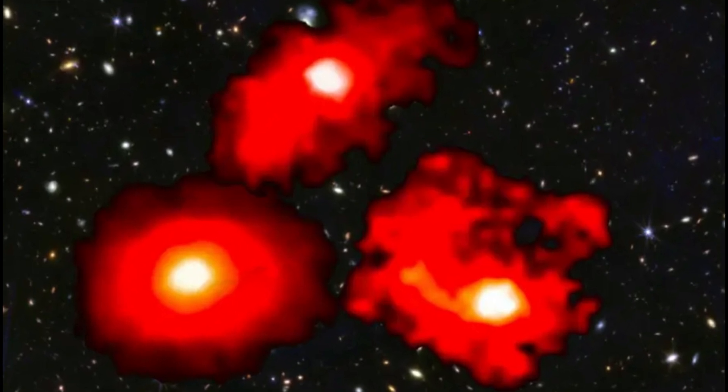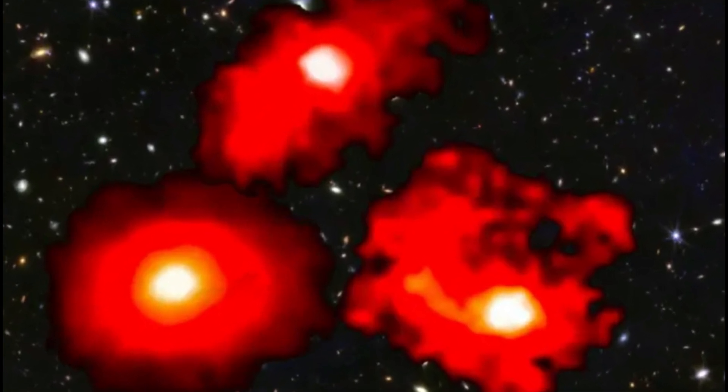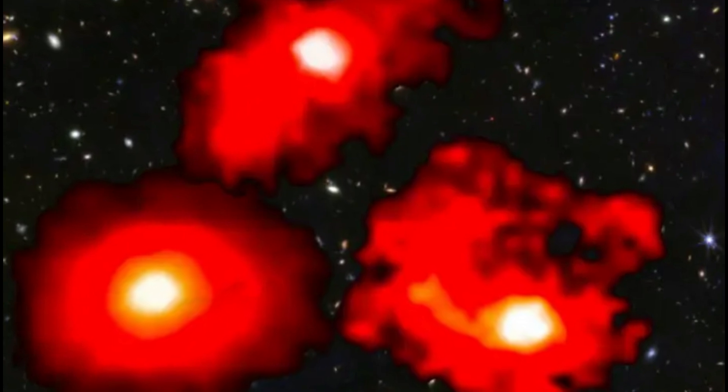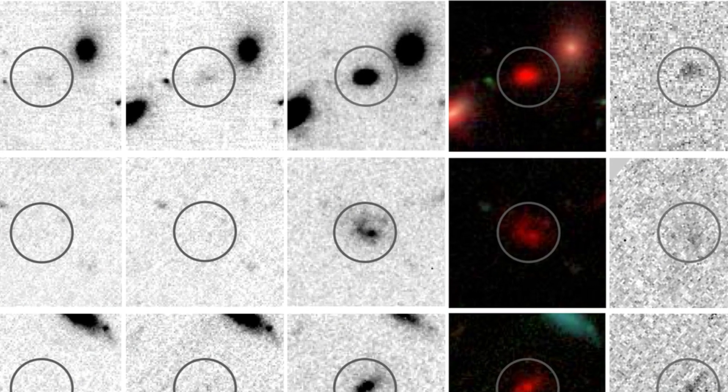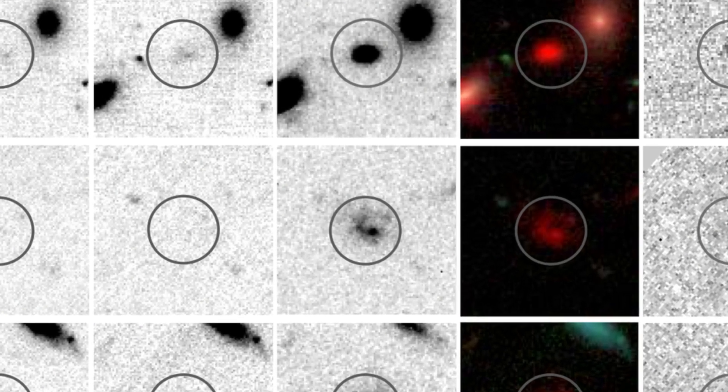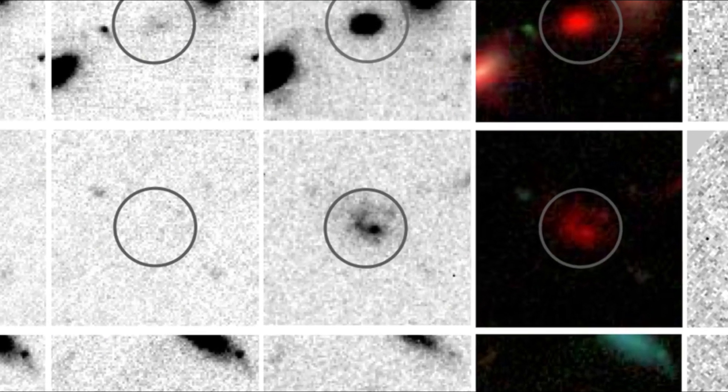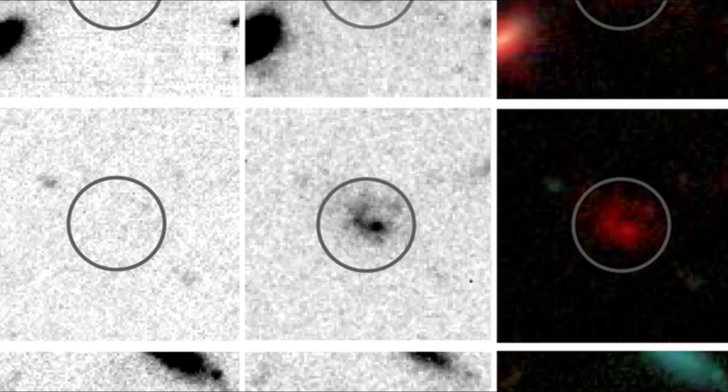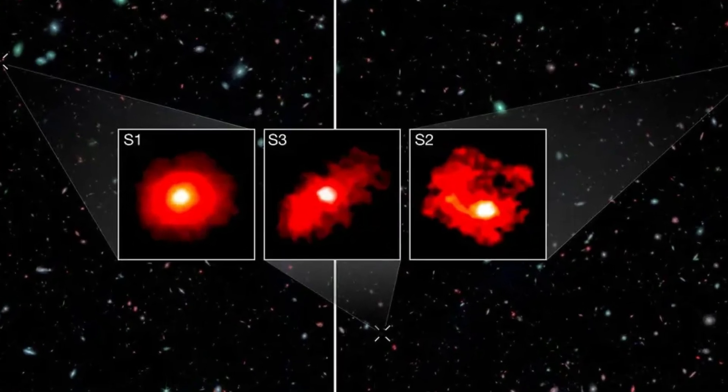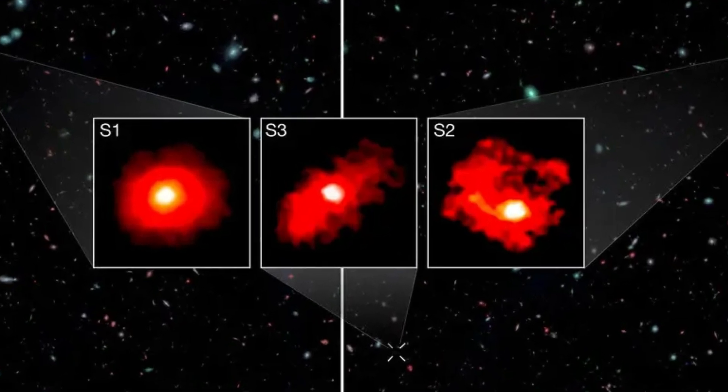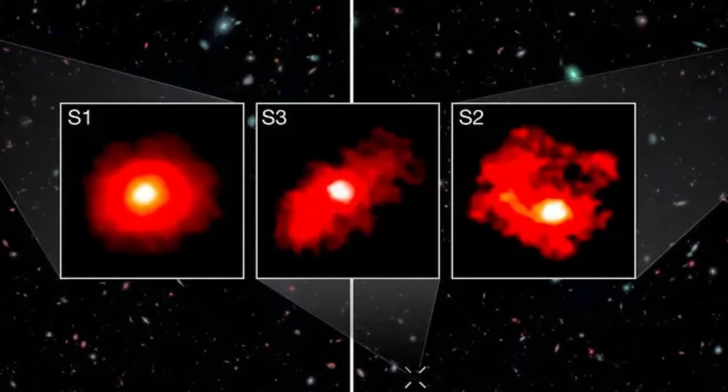The rapid emergence of such large systems challenges the traditional model of gradual galaxy formation, which typically suggests galaxies grow slowly over time through mergers and the gradual accumulation of gas and dust. Instead, these red monsters seem to have formed in an unusually short period, raising new questions about what might have driven their rapid development.